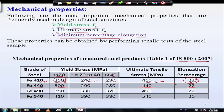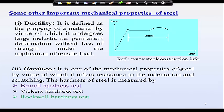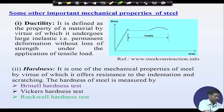For Fe 450 grade steel, yield stress is 300 MPa, ultimate stress is 440 MPa, and elongation is 22 percent. In this way, we can find out important properties like yield stress, ultimate stress, and percentage elongation from the grade of steel.